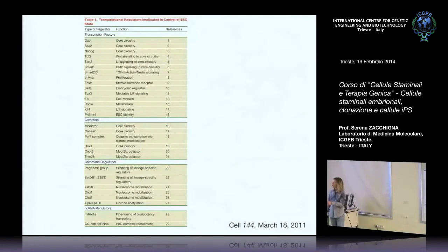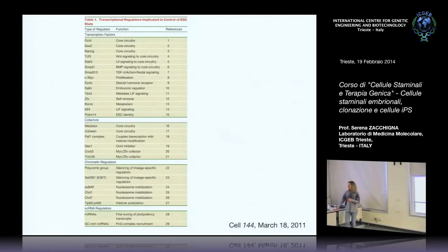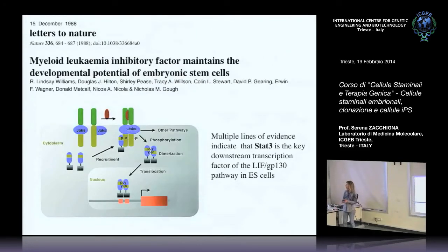Il LIF interagisce con recettori di membrana che attivano i geni di staminalità, bloccando il differenziamento. Oggi conosciamo una serie molto più ampia di proteine coinvolte — fattori di trascrizione, cofattori, regolatori della cromatina — che mantengono la staminalità e prevengono il differenziamento. OCT4, SOX2 e NANOG sono stati i primi scoperti, ma il quadro è molto più complesso.